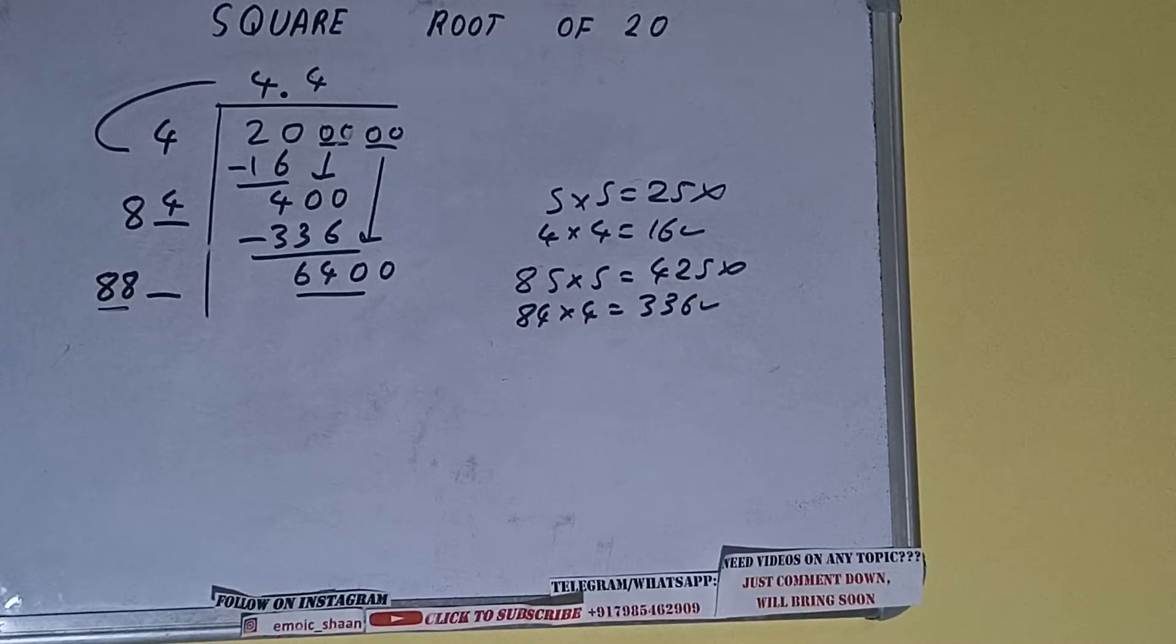So 88 times 9 is 792, which we cannot use. 88 times 8 is 704, which also we cannot use. 88 times 7 is 616, so we can try.